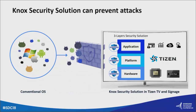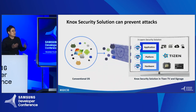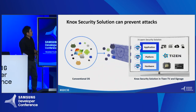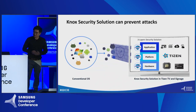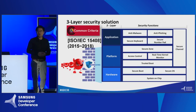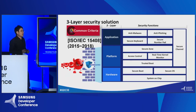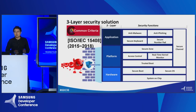Samsung Knox security solution is a special and powerful security solution for Tizen TV that other traditional platforms do not have. Knox protects all range of TV and B2B displays from hardware, platform, and to application. Samsung has adopted three layers of security solution into the Tizen TV and Tizen signage from 2015. On top of that, this solution is the world's first TV security solution certified by Common Criteria for four consecutive years from 2015. Common Criteria is a global security standard called ISO IEC 15408.